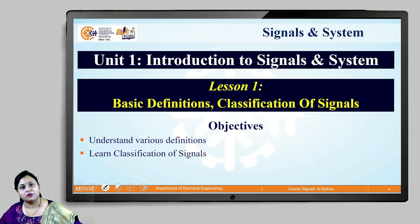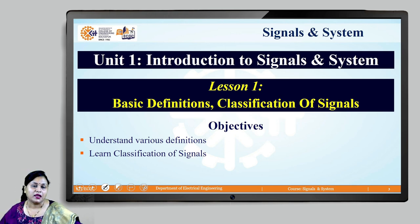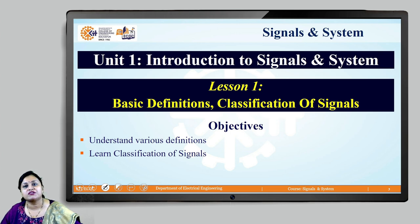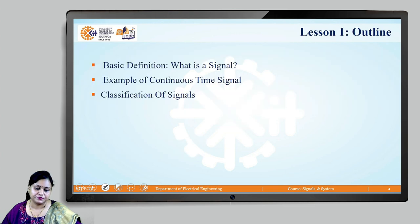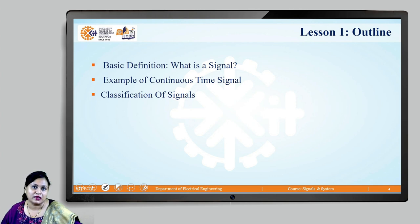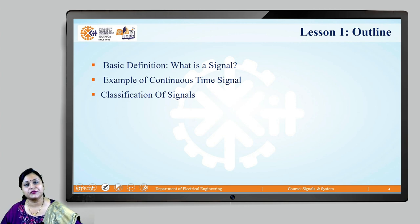We will begin with the first unit: Introduction to Signals and Systems. Today I present lesson number 1: Basic Definitions and Classification of Signals. The objective of this lesson is to understand the various definitions as well as learn the classification of signals. We will see the basic definition of a signal, an example of a continuous time signal, and the classification of signals.